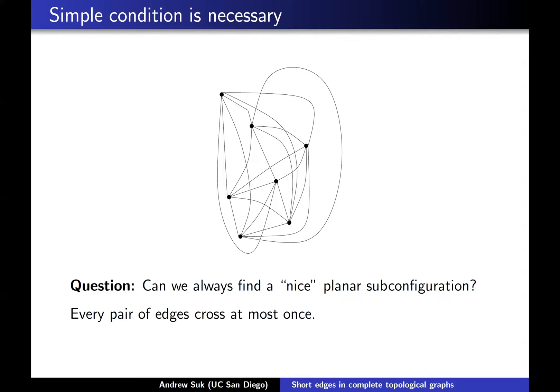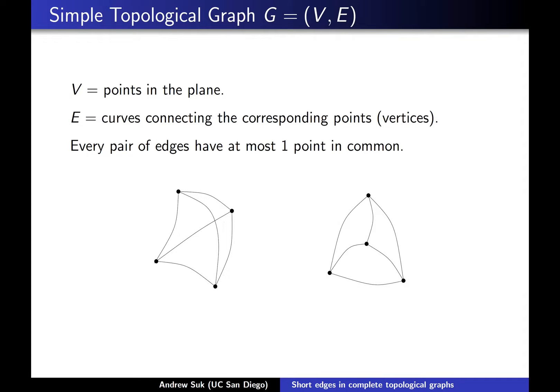Graphs drawn in the plane with the property that any two edges have at most one point in common are commonly referred to as simple topological graphs. When I say a topological graph, I just mean a graph drawn in the plane where the vertices are points and the edges are curves connecting the corresponding points. The simple condition here is that every pair of edges have at most one point in common.